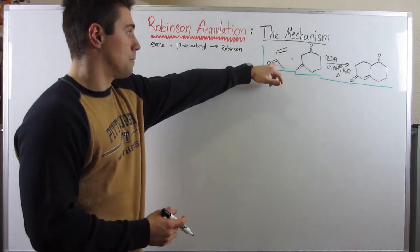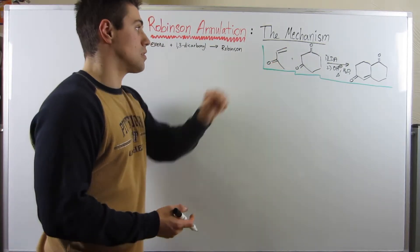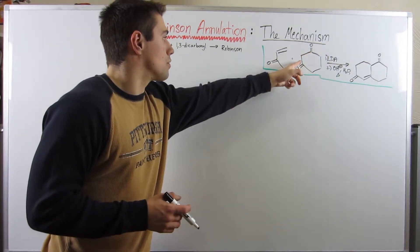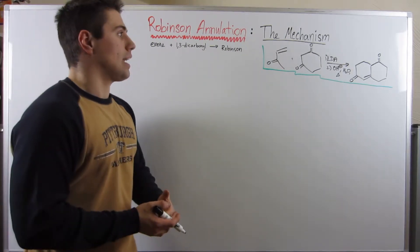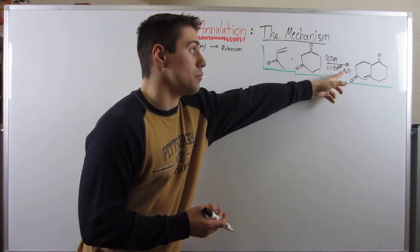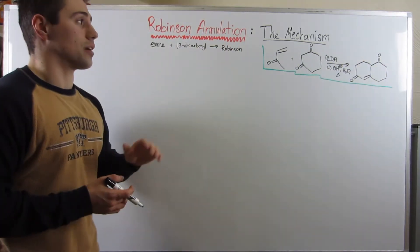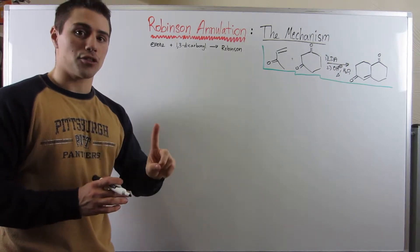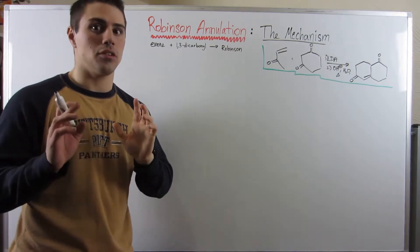Here's our enone, right? One, two, three, four conjugated system, the alkene and the ketone. Here's our 1,3-dicarbonyl. One, two, three, two carbonyls. If you throw in some LDA to help make an enolate and follow up with hydroxide in an aqueous environment, water and heat, you will form this Robinson product.